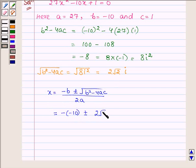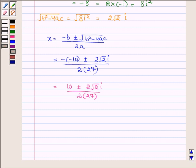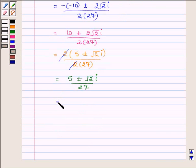This is equal to (10 ± 2√2 iota)/54. Taking 2 common from the numerator, we get 2(5 ± √2 iota)/2(27). Canceling the common multiple, we have (5 ± √2 iota)/27. Separating the real and imaginary parts, we have 5/27 ± √2/27 iota.